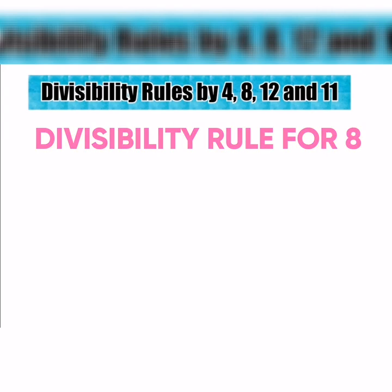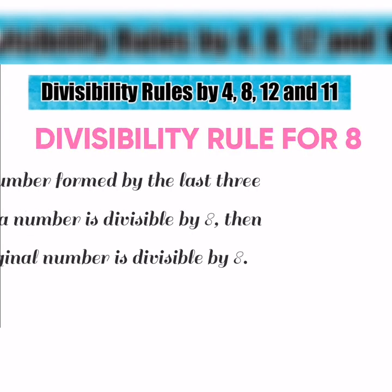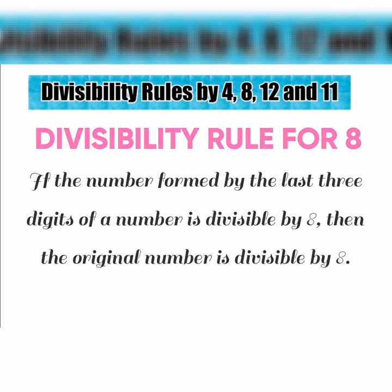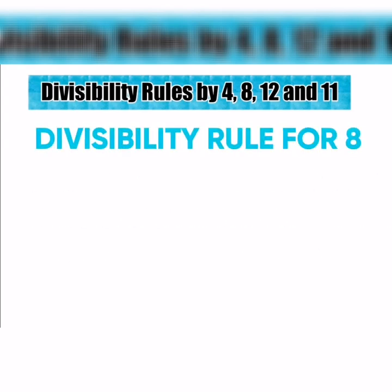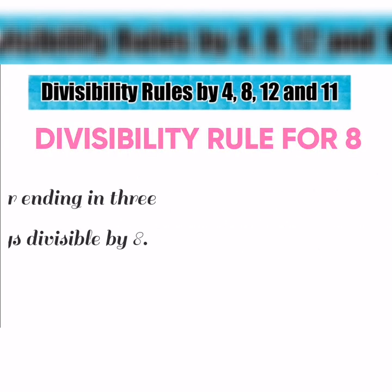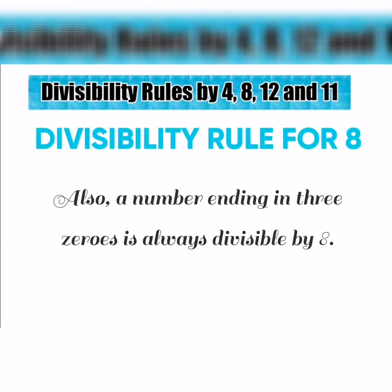Next, the divisibility rule for 8: If the number formed by the last three digits of a number is divisible by 8, then the original number is divisible by 8. Also, a number ending in three zeros is always divisible by 8.